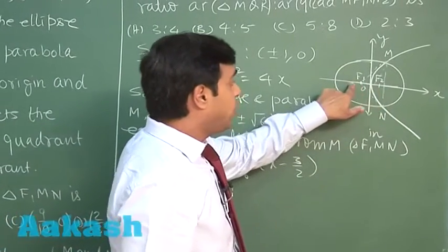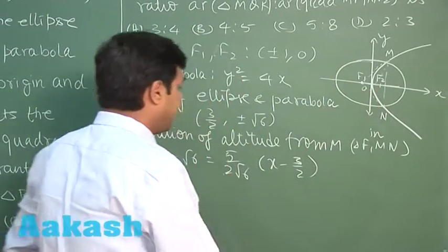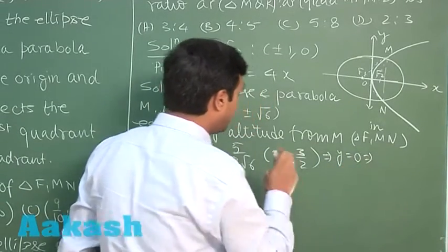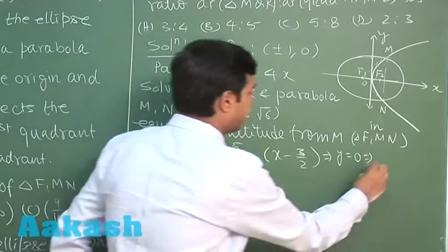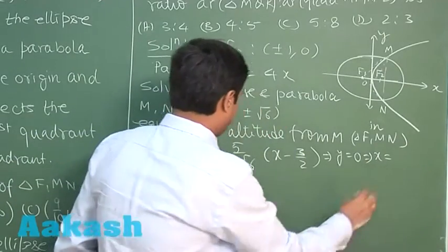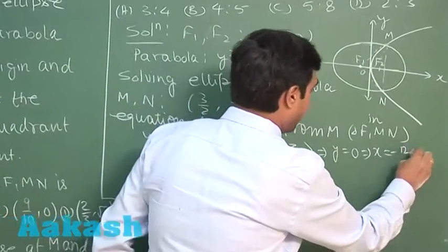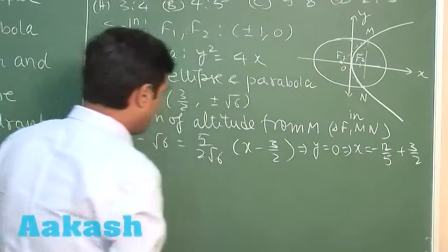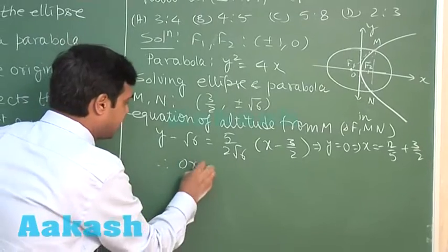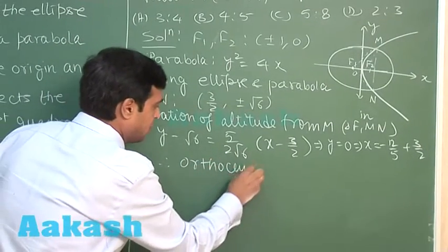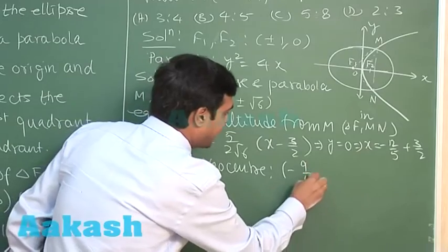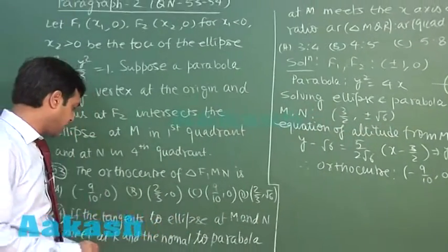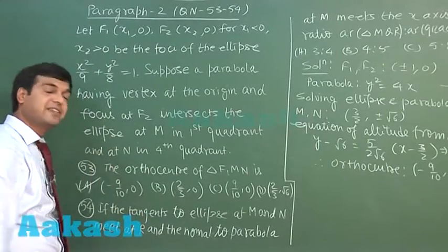Substituting y equals 0 in order to get the orthocenter, we get x as minus 12 by 5 plus 3 by 2. So we can write here the orthocenter obtained as minus 9 by 10 comma 0. So from the given four options, we can clearly see option A is the correct one.